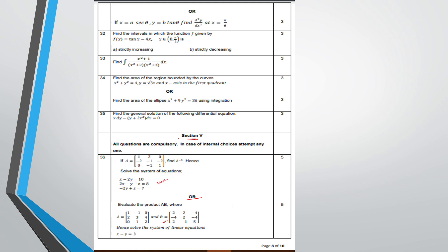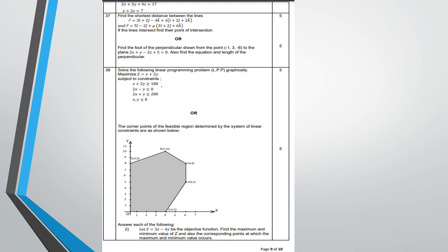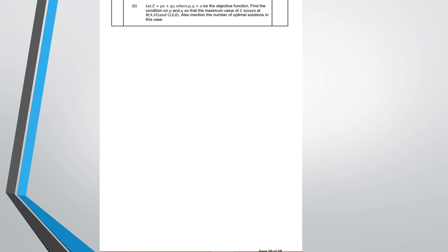Section 5 includes questions like solving equations, similar to textbook examples. Questions on 3D — foot of perpendicular and shortest distance — are well-known questions. In LPP, one question has a figure and one does not. Each and every question in the last section has alternate choices. Prepare well, reduce your stress, and I hope everything is clear. Thank you very much for watching this video.